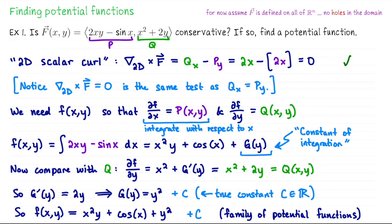The general process was to integrate the first coordinate function with respect to x — that gives you a rough draft version of your potential function. Then we differentiate with respect to y to find all the missing information we didn't get with the first calculation. Once you're done, it's easy to check your answer: take the gradient of the potential function. Differentiating with respect to x gives 2xy minus sin x — exactly the first coordinate function. Differentiating with respect to y gives x squared plus 2y — exactly Q. It's a nice process because it's easy to see at the end if you've done it correctly.